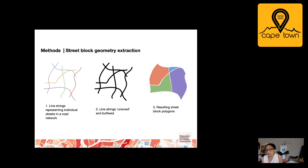In implementation, though, we found a set-theoretic approach to be more stable and performant. By buffering the one-dimensional line strings comprising the street network with a small buffer radius, we obtain two-dimensional polygons capturing the outline of the street network. We then find the set-theoretic difference between the administrative boundary polygons and the buffered street network polygon. This renders the negative area between the street network geometry as a collection of polygons — precisely the street blocks we are trying to extract.